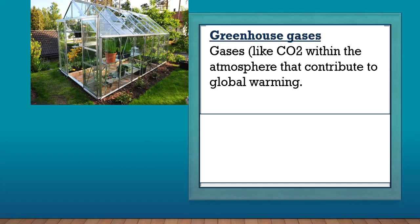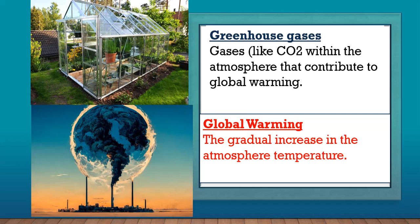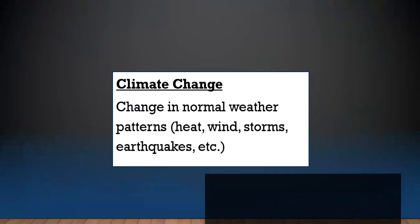That's exactly what greenhouse gases do to the atmosphere. Greenhouse gases like carbon dioxide get trapped in the atmosphere, and because they are trapped, they contribute to global warming. We can see in the picture greenhouse gases getting trapped in the atmosphere causing global warming. The definition of global warming is the gradual increase in atmospheric temperature.